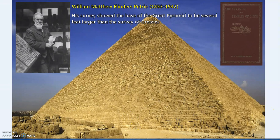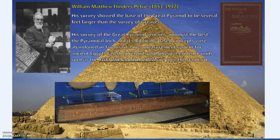There was a lot of rubble around the pyramid — the solar boat was still covered in rubble until the 1960s when it was discovered. But once the full base was cleared, Petrie, Cole, Dorner, and others were able to carry out very accurate surveys of the base up to the modern day.